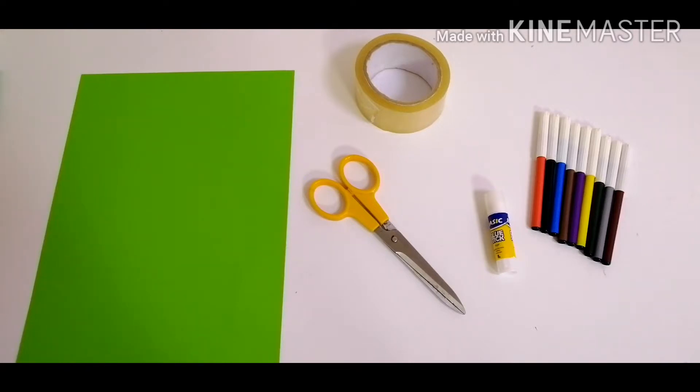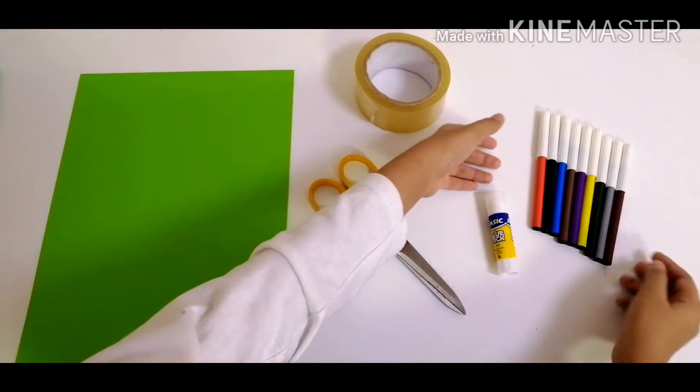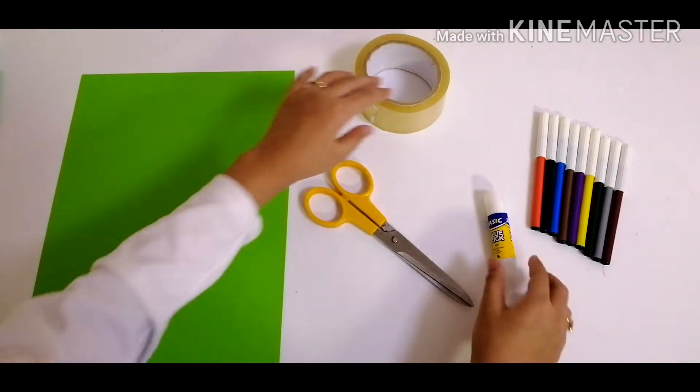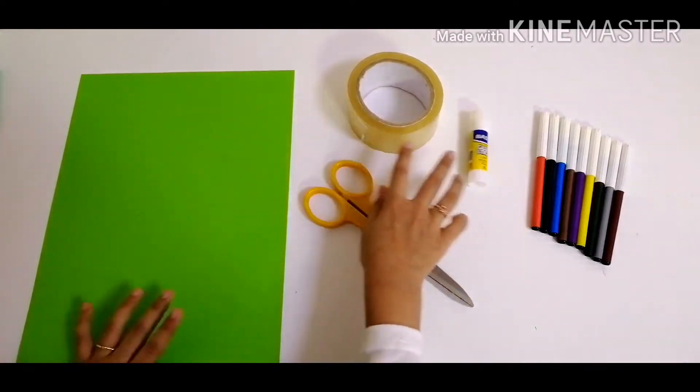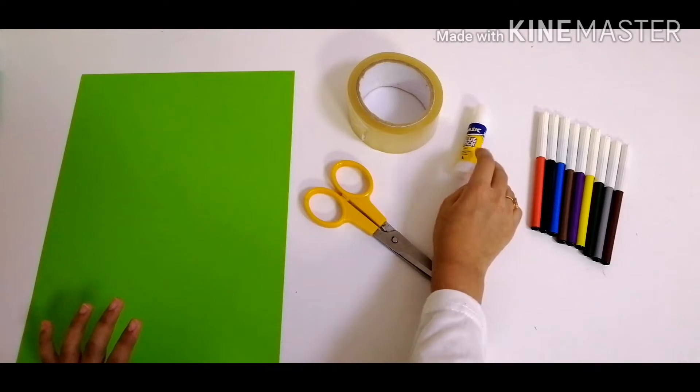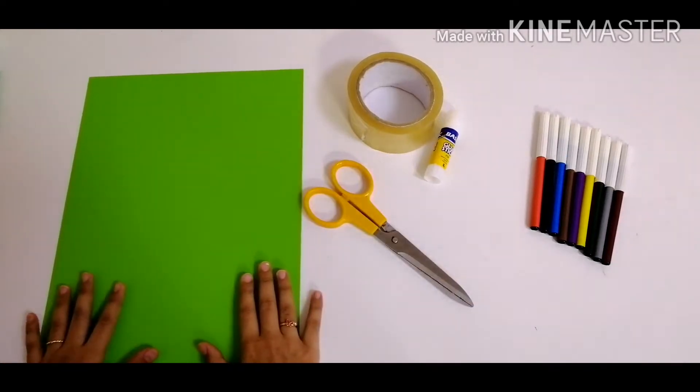The things we need are marbles, you can use crayons or pencil colors, then we need scissors, tape and glue (you can use both of them, I prefer glue more), and hard paper. If you don't have hard paper, you can use construction paper.